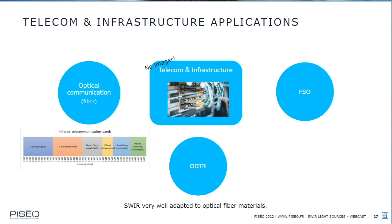Another application is free-space optical telecommunication — communication between two networks, ground-to-ground for example. Here, SWIR's ability to propagate through air regardless of weather — fog or other conditions — is an advantage over other wavelength ranges.